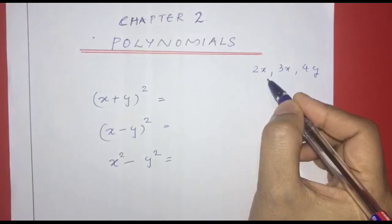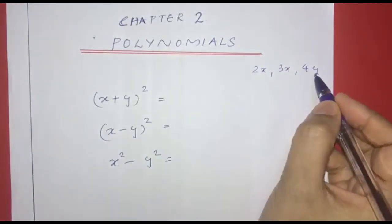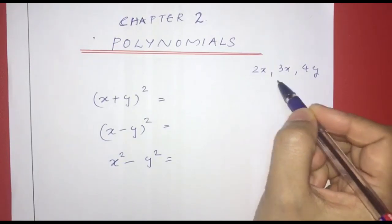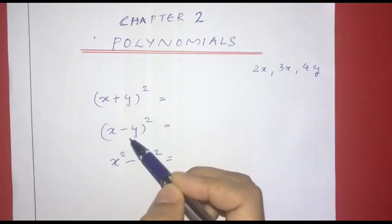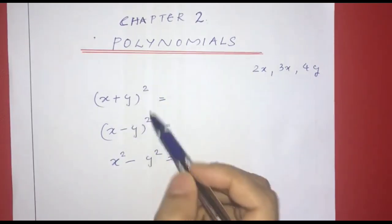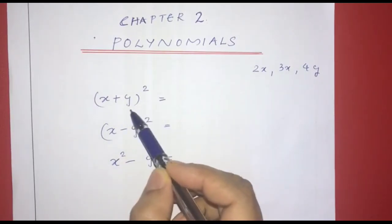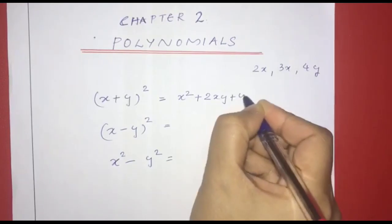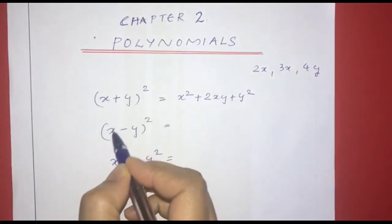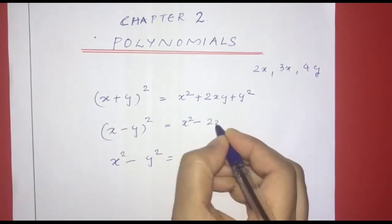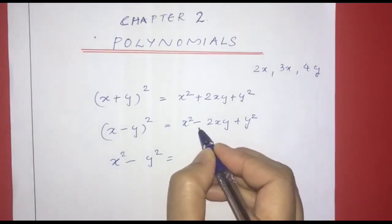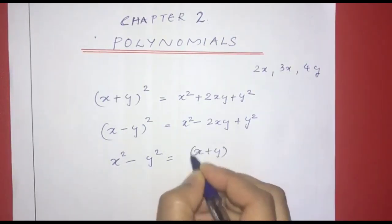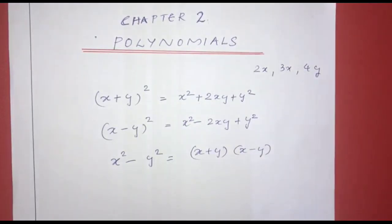Chapter 2: Polynomials. Here are the expressions we call algebraic expressions — 2x, 3x, 4y. These expressions involve addition, subtraction, multiplication, and division. This is from the previous class. Here are the expressions we call algebraic identities: x plus y whole square equals x squared plus 2xy plus y squared. x minus y whole square equals x squared minus 2xy plus y squared. x squared minus y squared equals x plus y into x minus y.